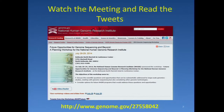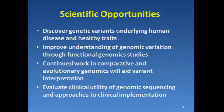I recommend that you take a look at least at the top-level plenary talks and maybe some of the concluding discussions — the meeting had a Twitter feed as well. At a very high level, scientific opportunities were: discover genetic variants underlying human disease and healthy traits; improve understanding of genomic variation through functional genomic studies; continued work in comparative and evolutionary genomics to aid variant interpretation; and evaluate the clinical utility of genomic sequencing and approaches to implementation.